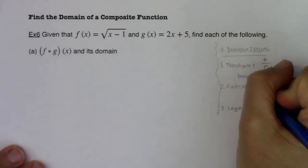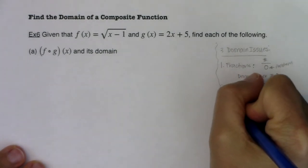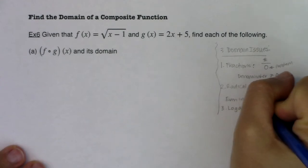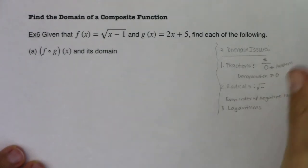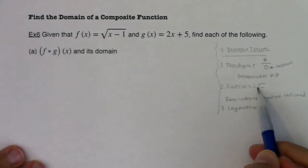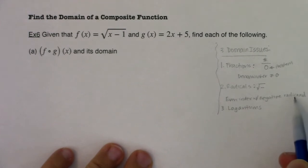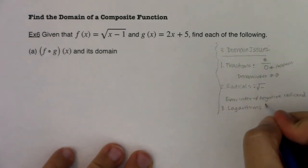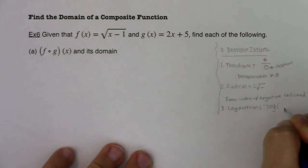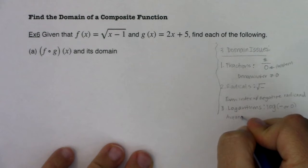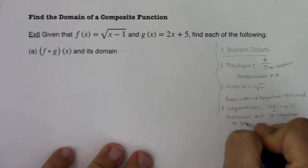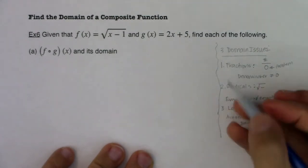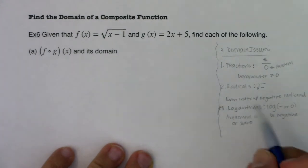For radicals, you cannot take the square root of a negative number — or really, you can't have an even index with a negative radicand. The number by the root symbol is the index; if nothing is written, it's implied to be two. The radicand is the stuff under the radical. For a logarithm, you have to take the logarithm of a positive number, so your argument can't be negative or zero. That third one we'll get into in chapter six, so we can put a pin in that for now.